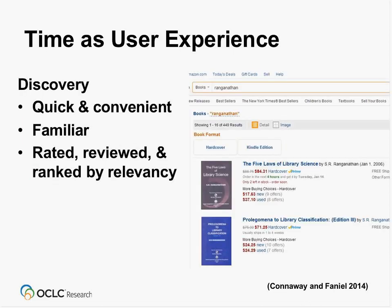We've also looked at time as a user experience — it's all about discovery. Web searching has driven higher expectations for our online library catalogs. Individuals want quick, convenient, and familiar. When we've talked to them, they mention ratings, reviews, and rankings by relevance. Many people reference Amazon — 'Why can't the library catalog resemble Amazon? Give me previews of what I'm looking at. Give me ratings.' But they want ratings and reviews of people like them.